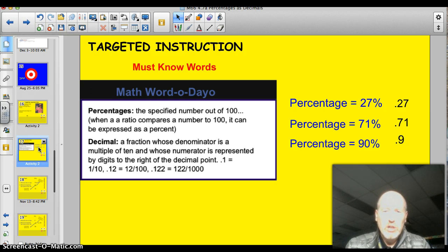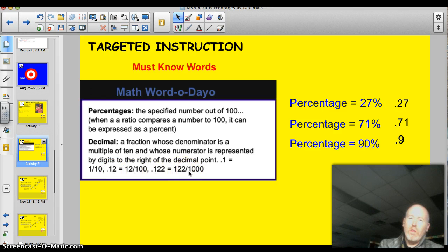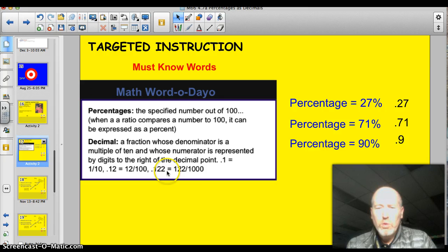A decimal is a fraction whose denominator is a multiple of 10, and whose numerator is represented by digits. Take a look at the fraction 1 tenth is .1. The fraction 12 one hundredths is .12. And 122 one thousandths is .122.